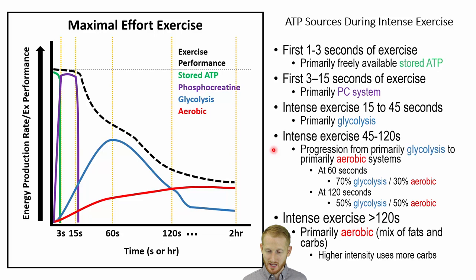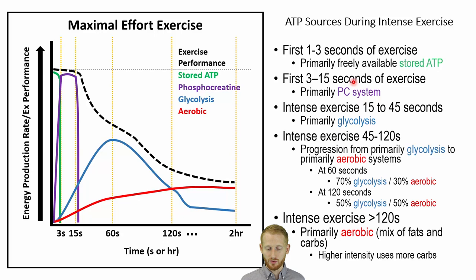Once you burn through that stored ATP, you're going to start using the phosphocreatine system — shown by the purple line going up as the green line comes down. The phosphocreatine system maintains that high level of exercise for about 15 seconds or so, give or take, depending on the person and their fitness level.